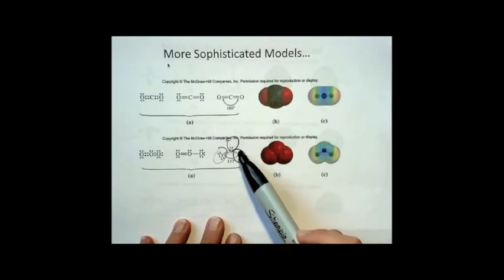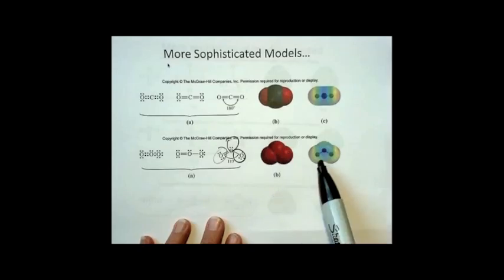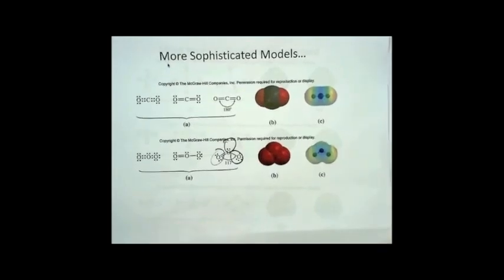You should know that it's bent. You should know about why the bond angle's a little bit less than 120. Here's a space-filling model. All the atoms are the same, but they're not linear. They're bent. And then here's the electron distribution model.